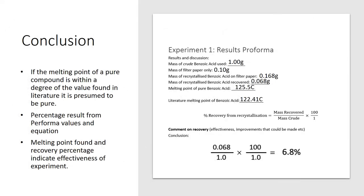For this experiment, what you're trying to get as an end result is pure solid benzoic acid. To find if the end result is pure, we compare the literature melting point to the experimental melting point. If they are within a degree of each other, the benzoic acid is presumed to be pure. We can also conclude how much was recovered during the recrystallisation process. Using a proforma template, record all the values then input into the equation to get a percentage yield result.